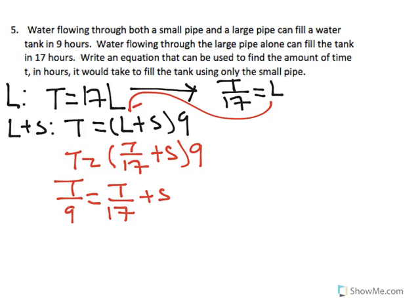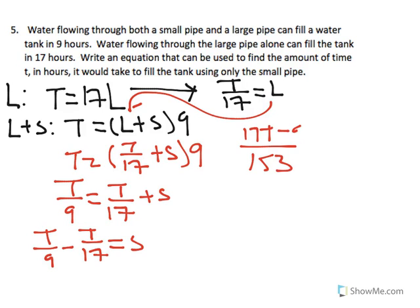Subtract. So t over nine minus t over 17 equals s. Now combine like terms. So we have 17t over 153 minus 9t equals s. So then this gives us 8t over 153 equals s.